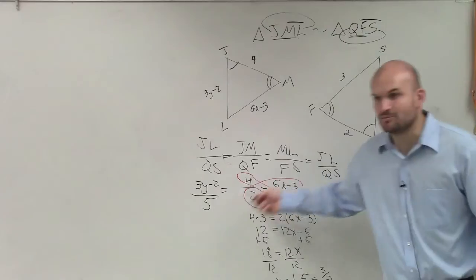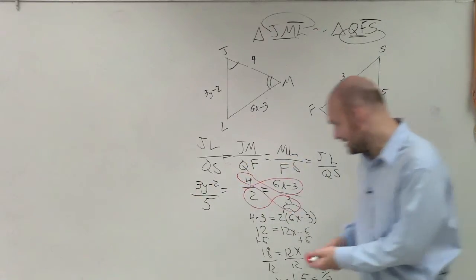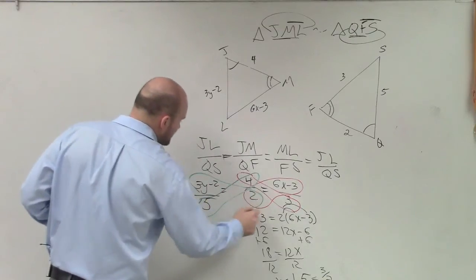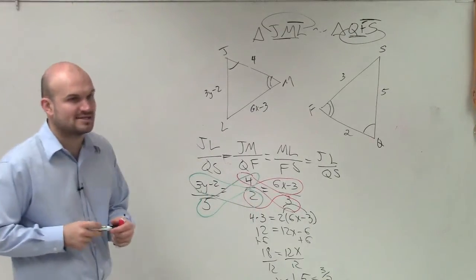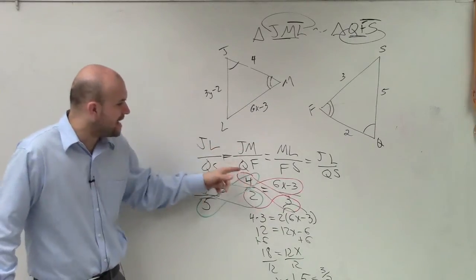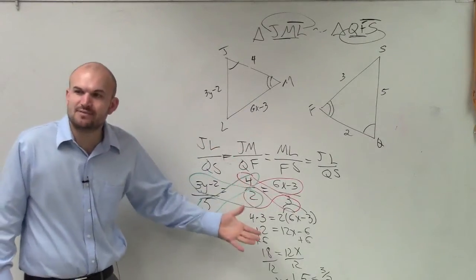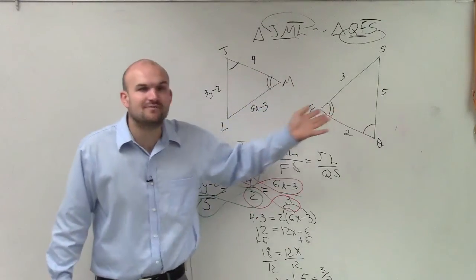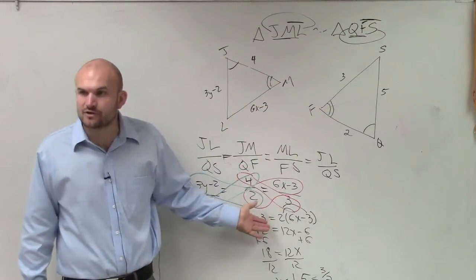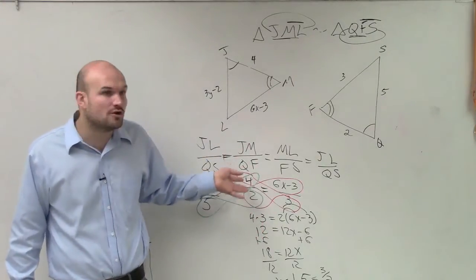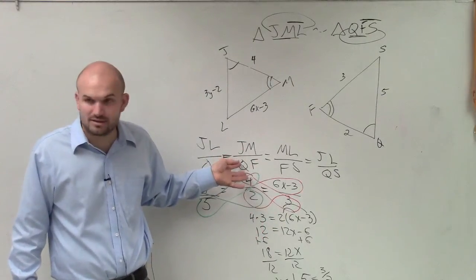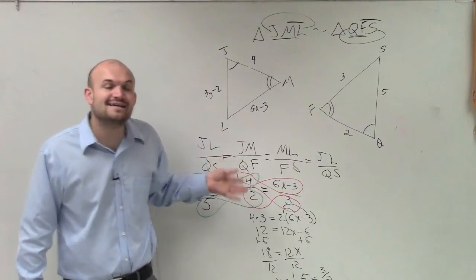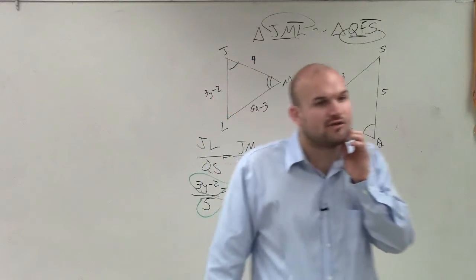But what I want you guys to notice, which is so important about this, is notice which ratio I'm doing cross multiplication with twice. I'm doing it with the ratio JM and QF. What is the difference about this ratio JM and QF? The difference is I have both of the values for JM and for QF. Right? I have both these values. There's no variables in this proportion. Right? Does everybody see? There's no variables in this proportion. So I can use it to help me solve for both of them.